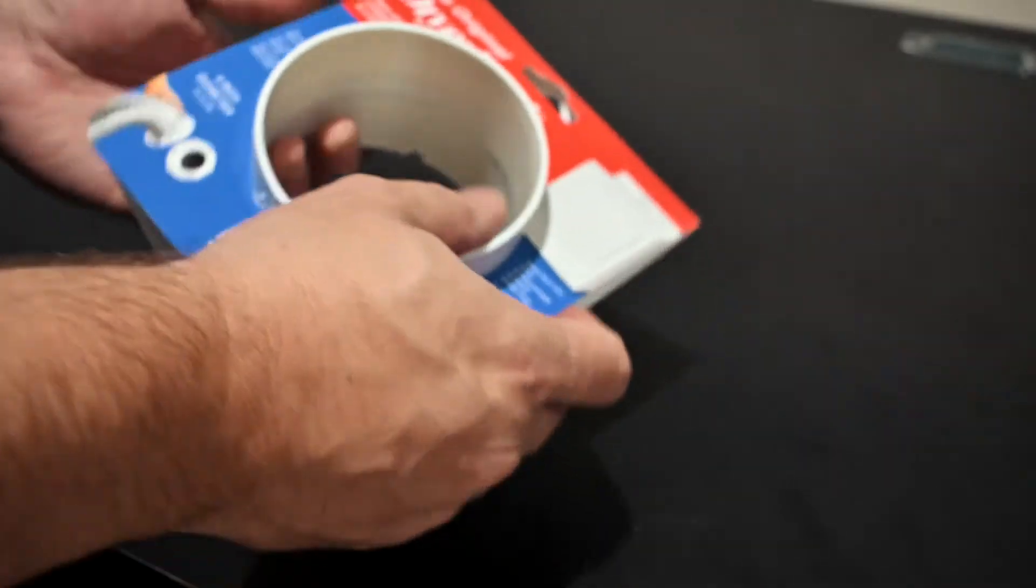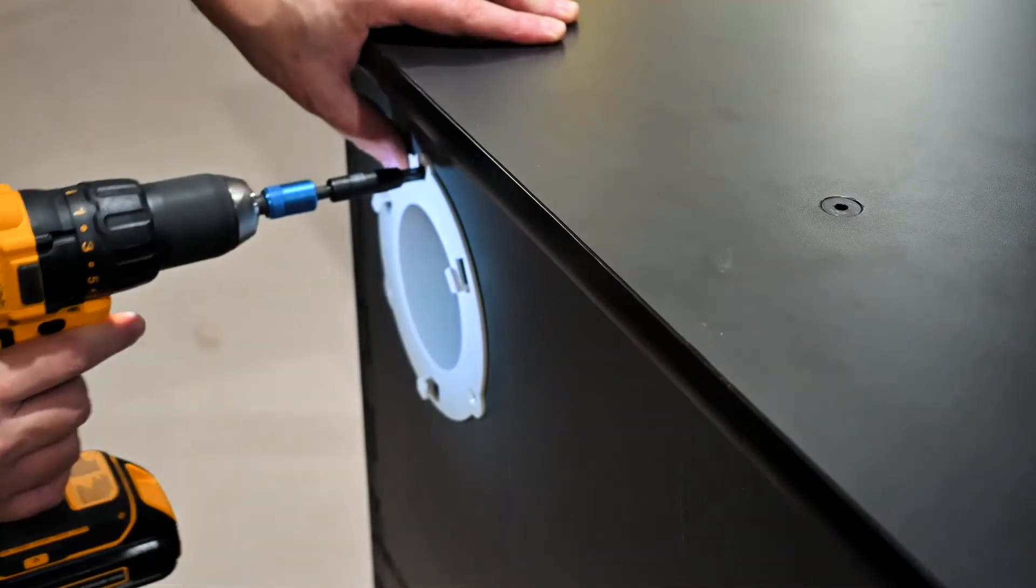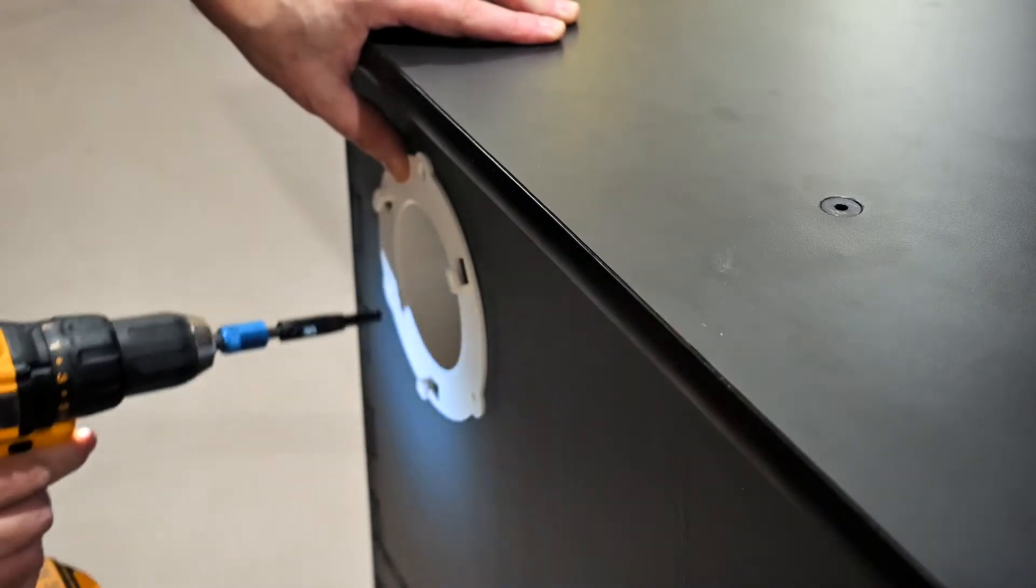I started by adding a quick release vent hose accessory to the side of the cabinet. I will provide a link to all the items I used in the description below if you're interested.